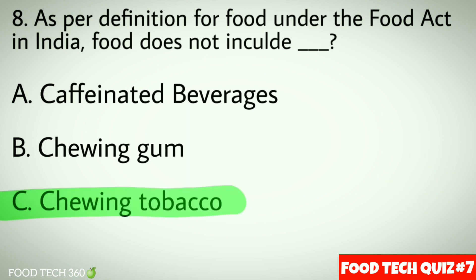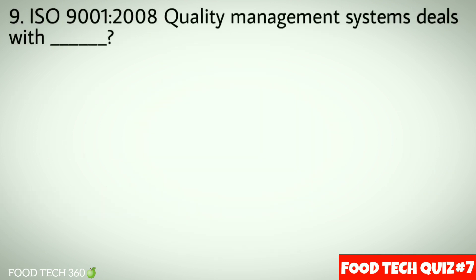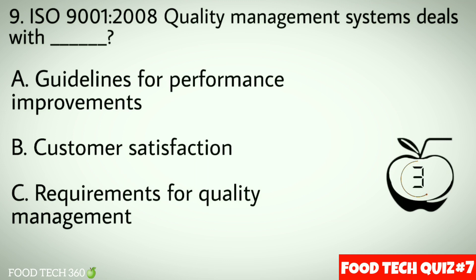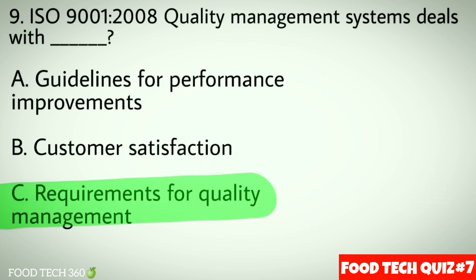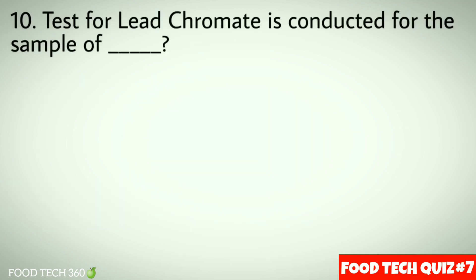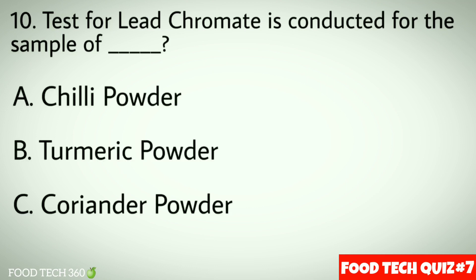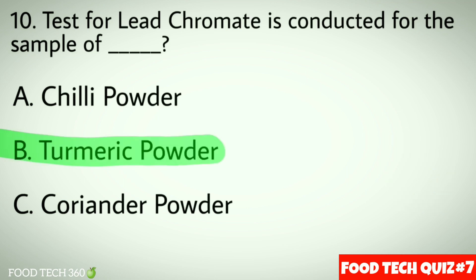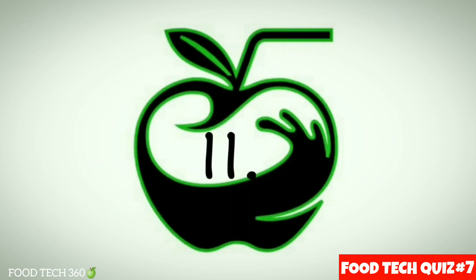Question number 9: ISO 9001:2008 Quality Management Systems deals with — options: a) Guidelines for performance improvements, b) Customer satisfaction, c) Requirements for quality management. Correct answer: c) Requirements for quality management. Question number 10: Test for lead chromate is conducted for the sample of — options: a) Chili powder, b) Turmeric powder, c) Coriander powder. Correct answer: b) Turmeric powder.